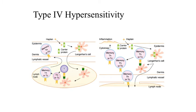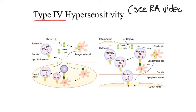Psoriasis is a type 4 hypersensitivity condition. I'll go into more detail about type 4 hypersensitivity here, though I originally introduced it in the context of rheumatoid arthritis. In type 4 hypersensitivity, there are two responses to note: the first, shown on the left, is the precipitation of the response; the second, shown on the right, is the presentation or expression of the immune response.